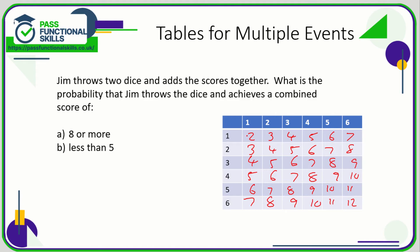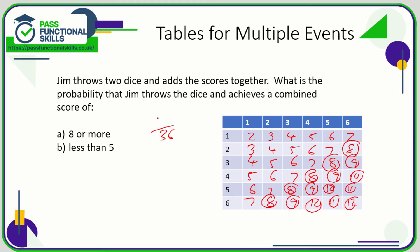So there are 36 outcomes in total. How many ways can he score eight or more? Counting those outcomes — including the eights — there are 15. So 15 out of 36 is the probability, but these numbers can both be divided by three. 15 divided by three is five, 36 divided by three is 12. So the probability of eight or more is five twelfths.